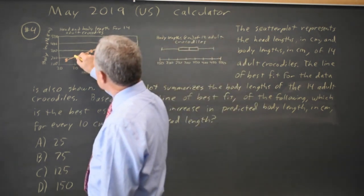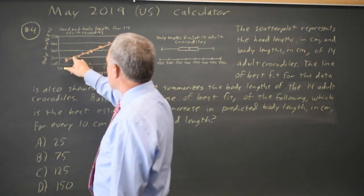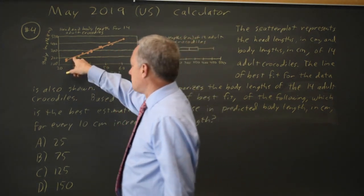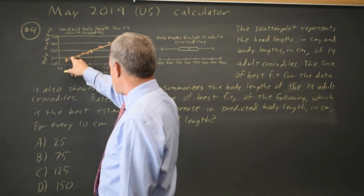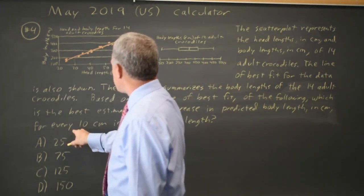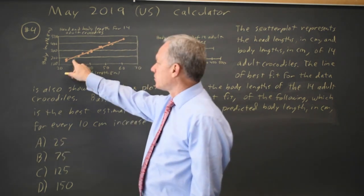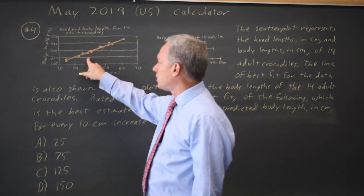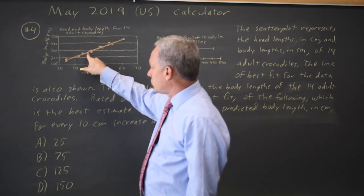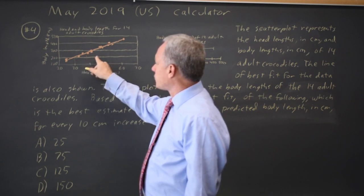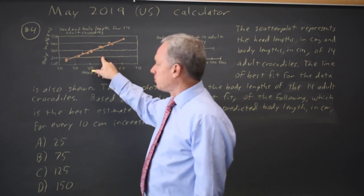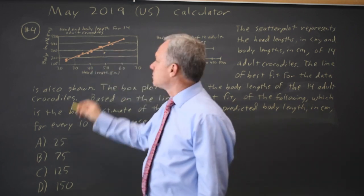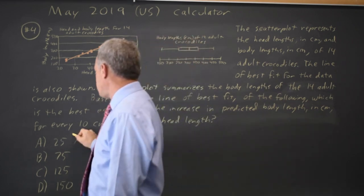If you look at head length 30 centimeters, the body length is just over 200. Let's call it 215 because that was the value in a previous question. If we go up by 25 centimeters for every 10 centimeters of length, at 40 centimeters it would be 215 plus 25 is 240, and at 50 it would be 240 plus another 25 is 265, which would be about here. And this is nowhere near the line of best fit, so choice A is wrong. That's too low.